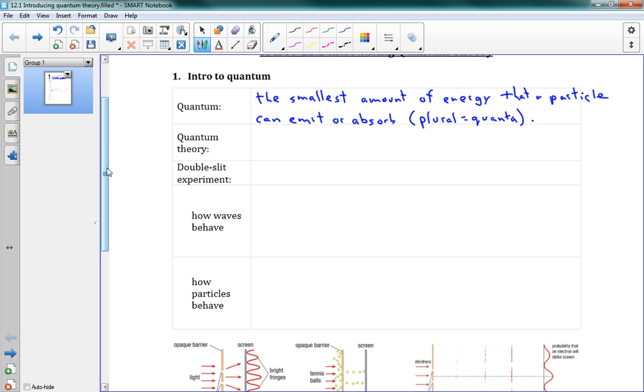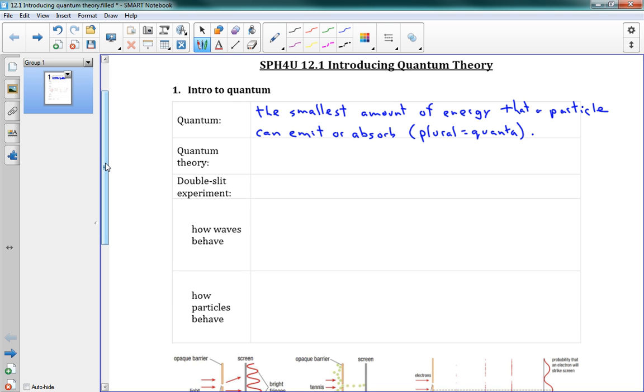And it turns out that that actually explains a lot of very strange behavior that we see at the low level. Now, quantum theory has expanded to mean a lot more than that, but that's where it started. So quantum theory says that energy, all energy is governed by these quanta, which is the amount by which they can be transferred. Also, this is maybe what you're more familiar with, energy can behave as either particles or waves.